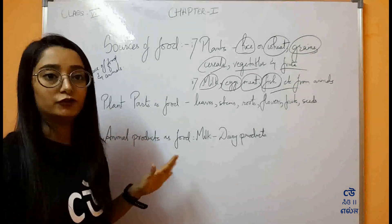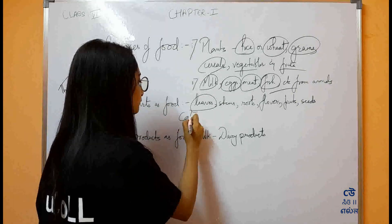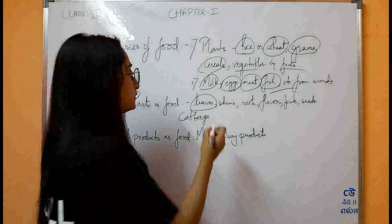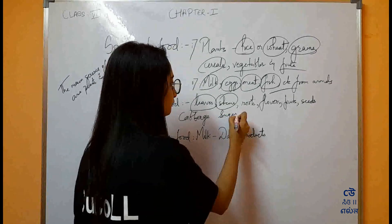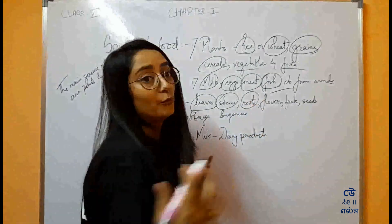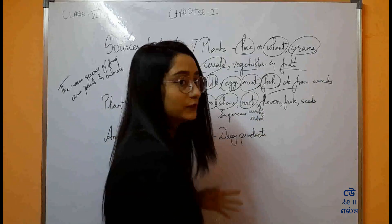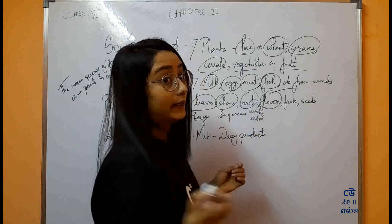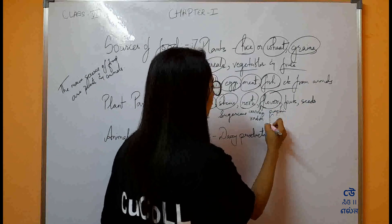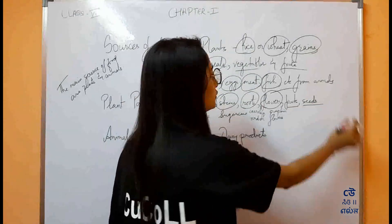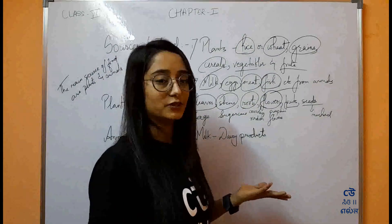Now, plant parts as food — what are the parts of plants that we take as food? In leaves, for example, cabbage. Stems — stems of some plants are also edible, like sugarcane. Roots — modified roots such as carrots, radish, etc. Flowers are also edible parts of a plant — for example, pumpkin flowers are edible. And fruits and seeds — for seeds, we can say mustard seeds; from mustard, we get mustard oil, which we use in our daily lives.